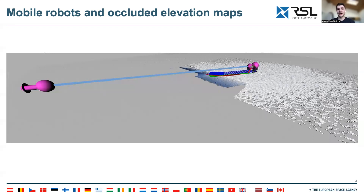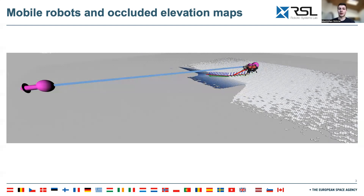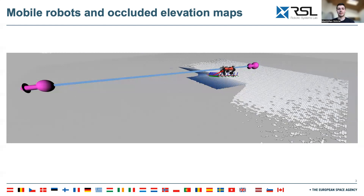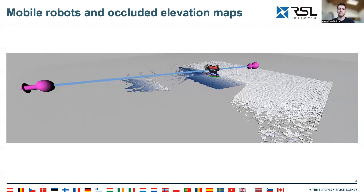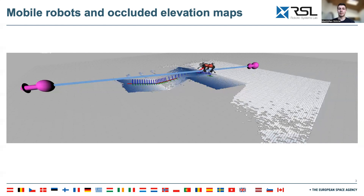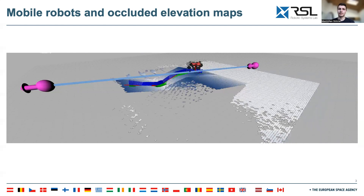An incomplete elevation map severely limits the planning horizon, as seen in this example. Oftentimes the robot has to stop and re-plan when more of the environment ahead becomes visible.